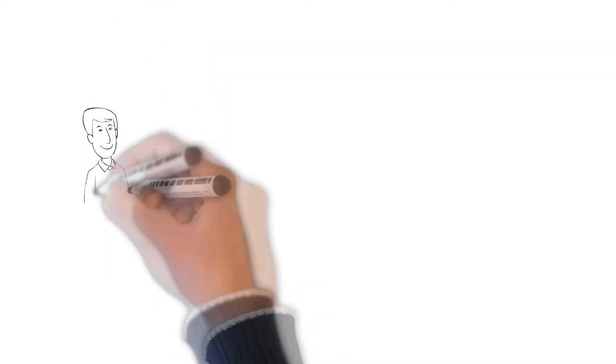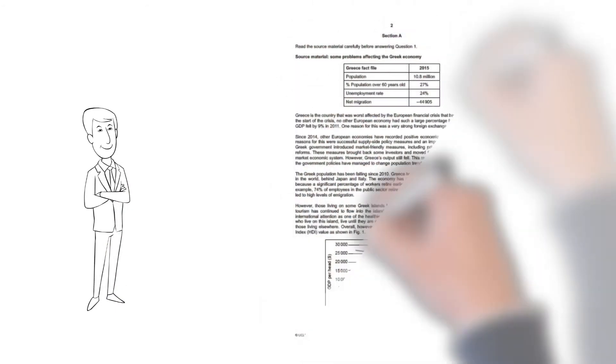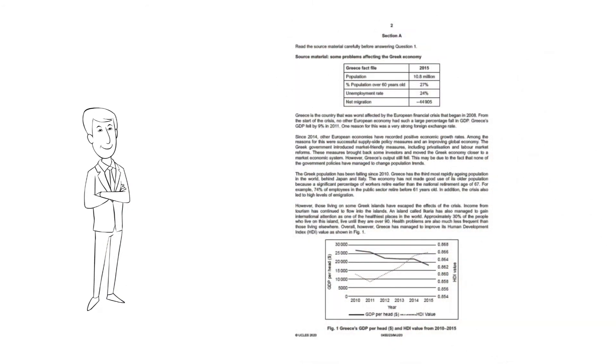Opening the paper, we come to section A question 1. This question you must do. The first part is data about a certain situation, in this case some problems affecting the Greek economy. They have given us some tables to find some data from and some text detailing the situation.